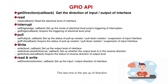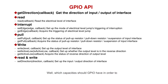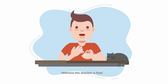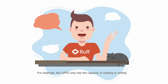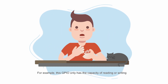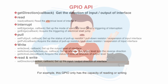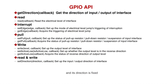The last API is the setup of direction. Which capacities should GPIO have in order to set up the direction? Only when it has both the writing and reading capacities can the direction be set up. Otherwise, the direction is fixed. For example, if this GPIO only has the capacity of reading or writing, its direction is fixed — either input or output.